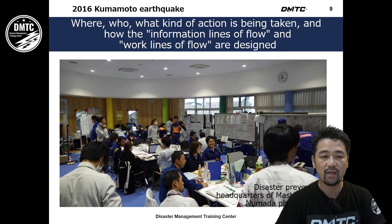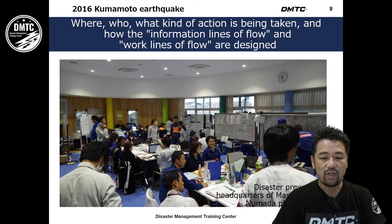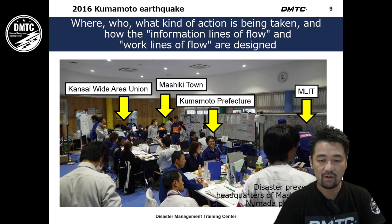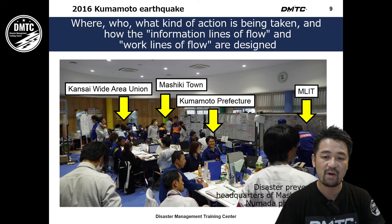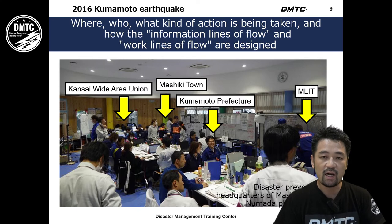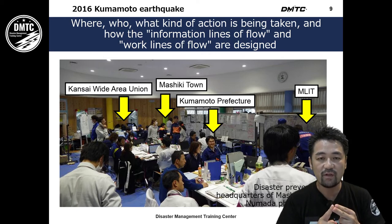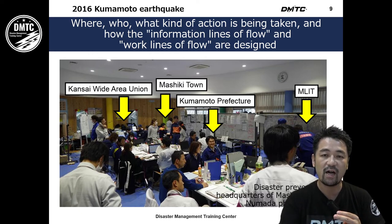This photo shows the Emergency Operations Center (EOC) during the 2016 Kumamoto earthquake disaster in Masiki Town. Many organizations — Kansai Wide Area Union, Masiki Town, Kumamoto Prefecture, and central government — came to support the local government. To manage an EOC effectively, there are two key points: first, how we design information flow in the space — information management; and second, how we design the work line for efficient operations.